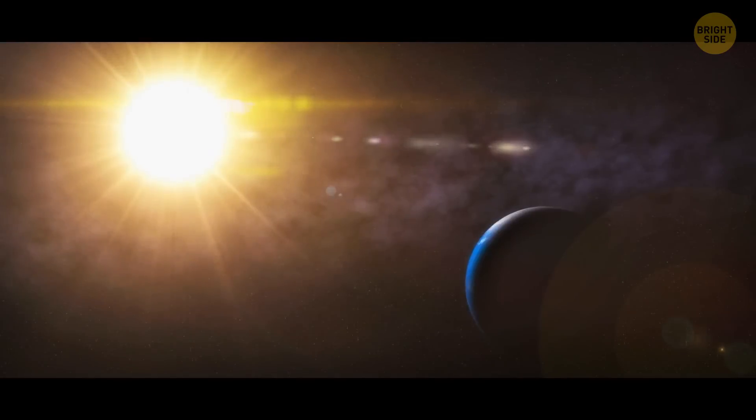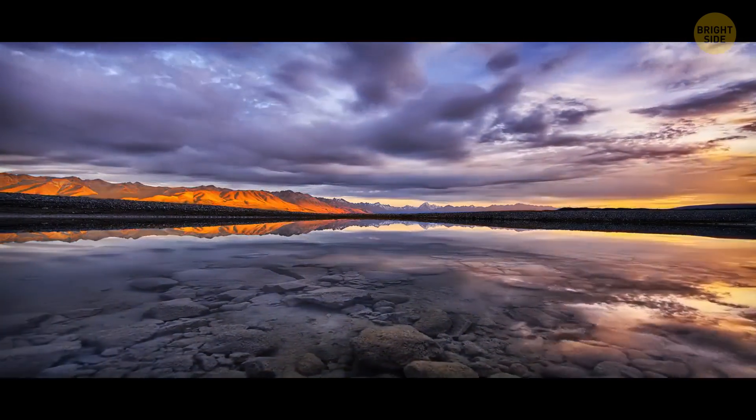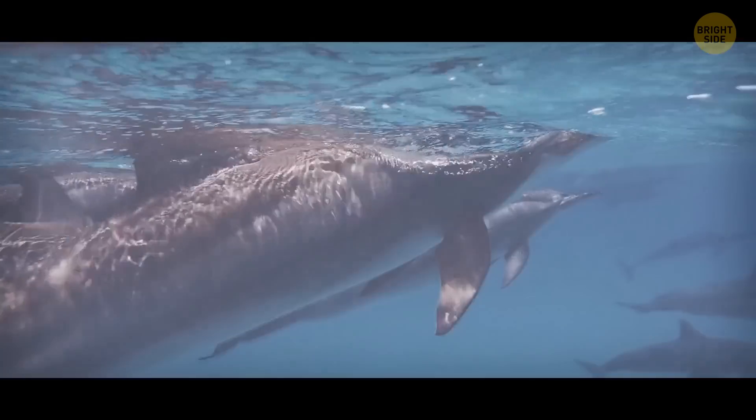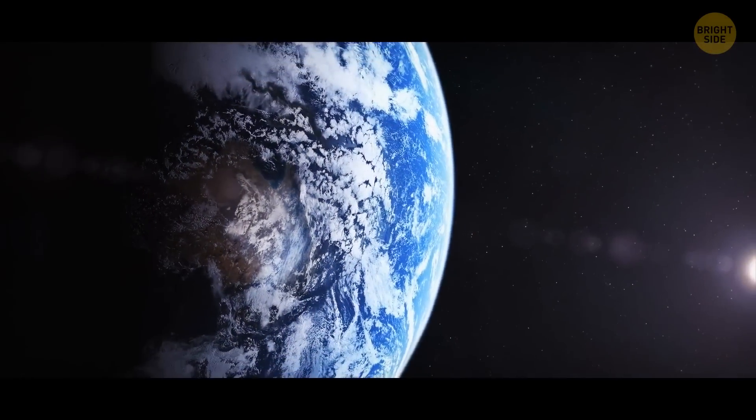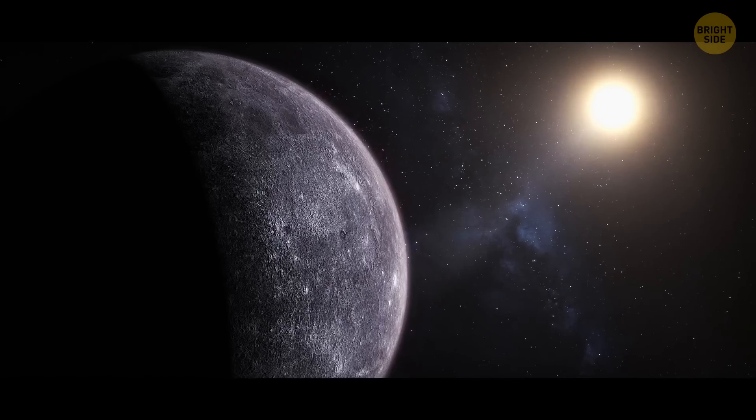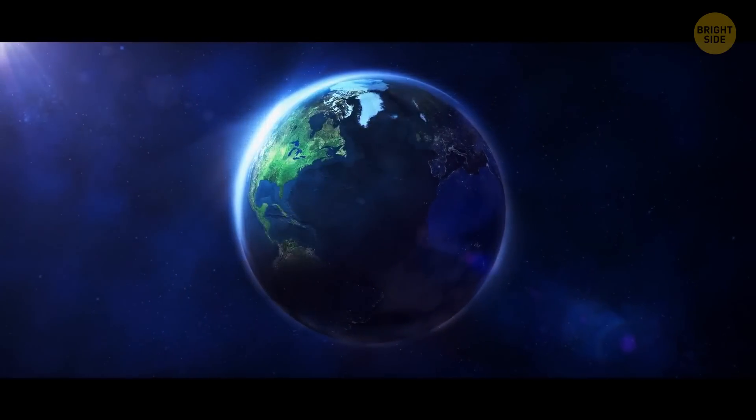But Earth hovers in a perfect spot called the habitable zone. It has the right temperature for the water to remain liquid and for all forms of life to flourish. But what if Earth was the only planet in the solar system? No Mars, no Jupiter, no Mercury, no Venus. Things might have turned out a little different.